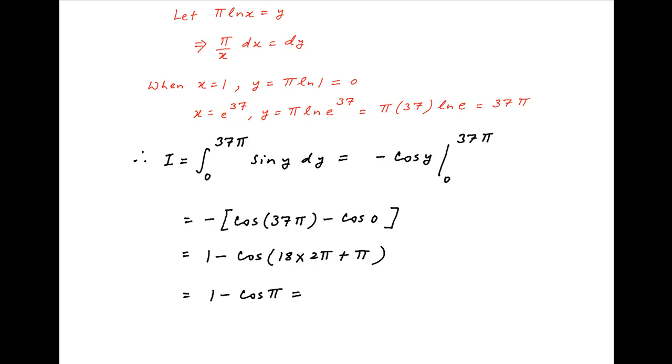Therefore, the value of i is equal to 1 minus cos pi. Cos pi is equal to minus 1 and therefore, the value of i simplifies to 2, which is the required answer.